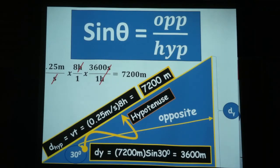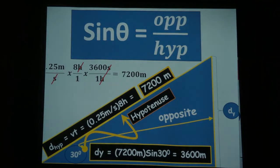7,200 meters times sine 30 equals 3,600 meters.